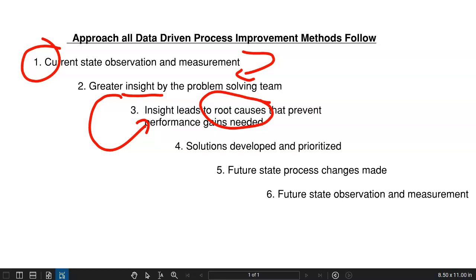With these fewer variables that we call root causes, in step number four, we try to build solutions that attack those root causes. We do this with DMAIC, we do this with Kaizen, with all data-driven problem-solving approaches. Once root causes are determined, we start to develop some proposed solutions.